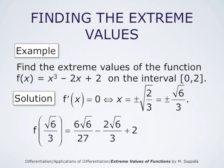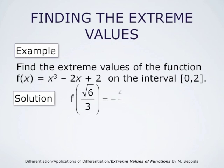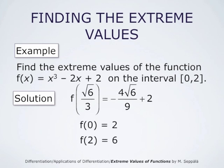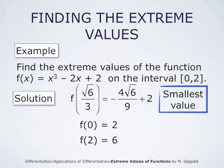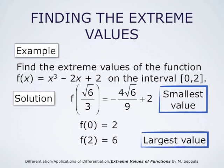The value of f at square root of 6 over 3 is 6 times square root of 6 over 27 minus 2 times square root of 6 over 3 plus 2, which simplifies to minus 4 times square root of 6 over 9 plus 2. The value of f at 0 is 2, and the value of f at 2 is 6. Comparing these three values, the first one is the smallest — this is the minimum value of f on the interval from 0 to 2 — and the value of f at x equals 2 is the largest value.